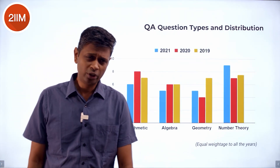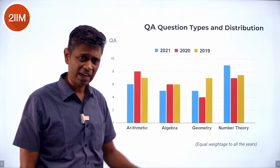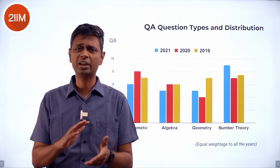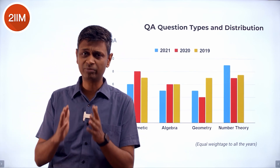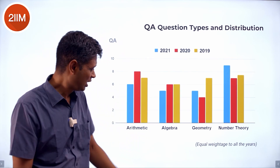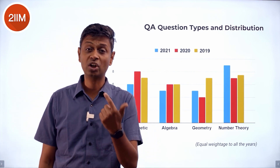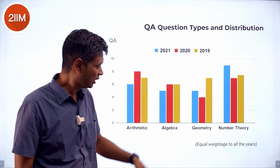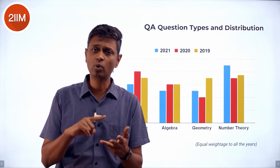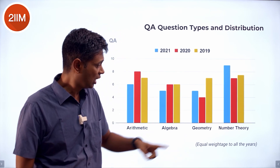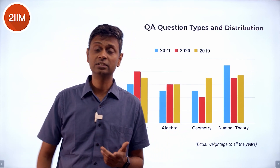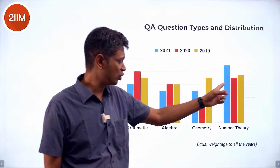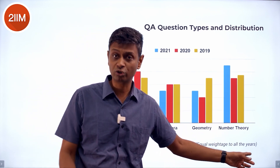In Quant, we break topics into four categories: Arithmetic, Algebra, Geometry, and Number Theory. Arithmetic covers percentages, profit and loss, speed-time, races, pipes and systems, and work and time. Algebra covers inequalities, functions, elements of polynomials, and pairs of equations. Geometry covers geometry, trigonometry, coordinate geometry, and mensuration. Number theory covers numbers, factors, factorials, and remainders. Within this space, permutation, combination, probability, and set theory also sit.